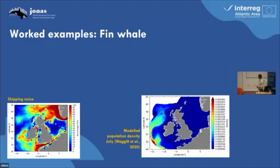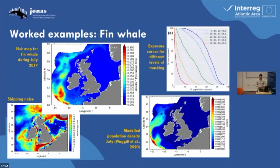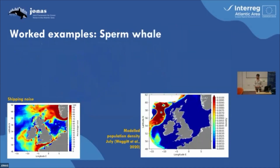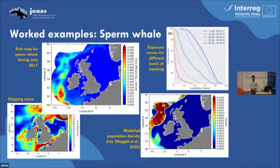Looking first at fin whales, this is a distribution of fin whales from Waggett et al on the bottom right. We see them offshore in those deeper areas. So combining that with the pressure metric, we get a risk map similar to what Thomas was showing us. And then these exposure curves, where that green line is our 20 decibel ship noise excess metric, which is the one we've used similarly to Jakob. And we can do the same for sperm whales — the distribution is slightly different, distributed a bit further north — and we get a fairly similar looking risk map and exposure curves.